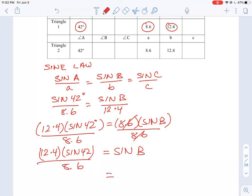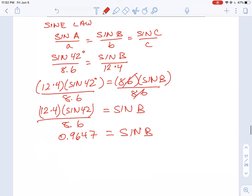So now sine B is going to give us a decimal. If we work this through, we're going to see sine B is equal to 12 times the sine of 42 degrees divided by 8.6, which is going to be equal to 0.9647. But what we're after is angle B.